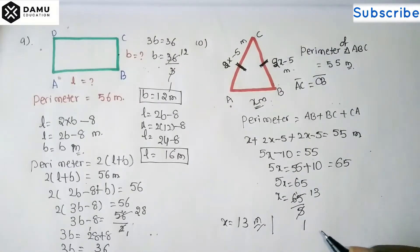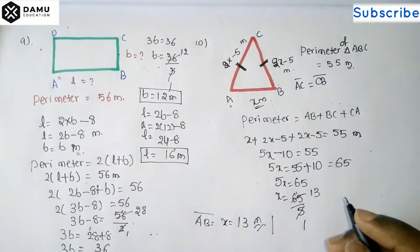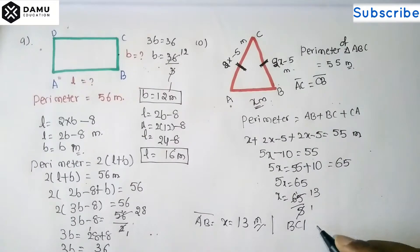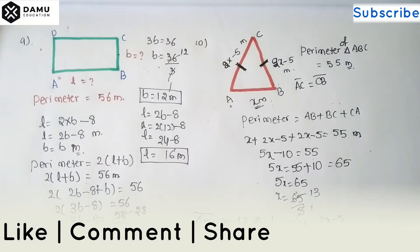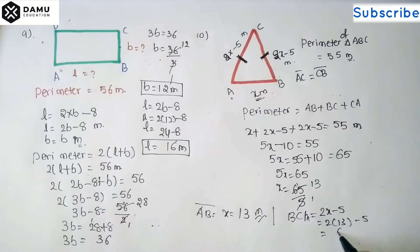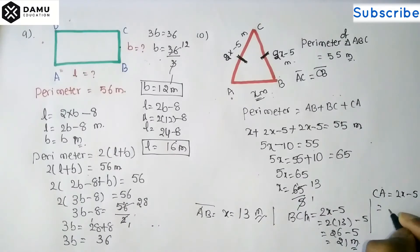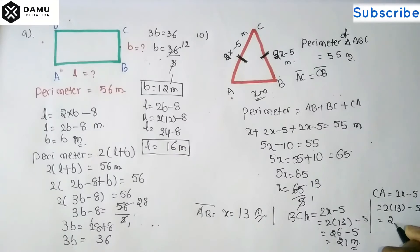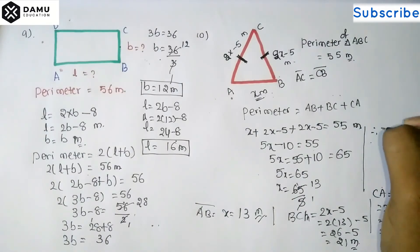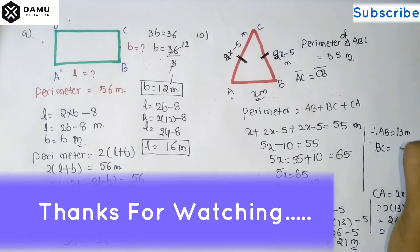So AB = x = 13 meters. Then BC = 2x - 5 = 2 into 13 - 5 = 26 - 5 = 21 meters. CA is also equal to 2x - 5 = 21 meters. Therefore AB = 13 meters, BC = 21 meters, and CA = 21 meters.